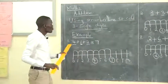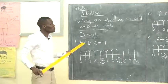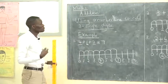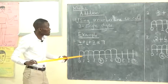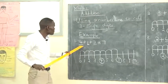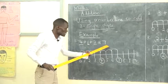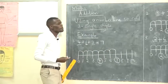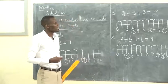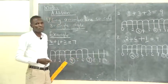When using a number line, always look at the numbers and skip according to what you are adding. For example, we solved four plus one plus two which equals seven. You will find more examples in your books, and I believe you will be able to do the exercise I am going to give you. Thank you.